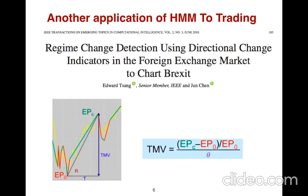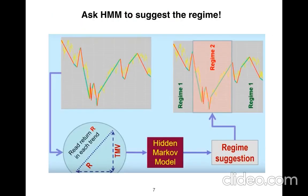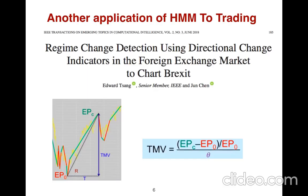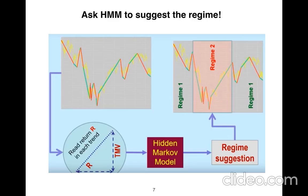This is just one approach. We first identify the regime we are in. The formula typically shows how large the volatility is, and based on volatility we can define different regimes. The Hidden Markov Model then allows us to suggest which regime we are currently in.